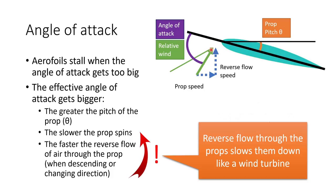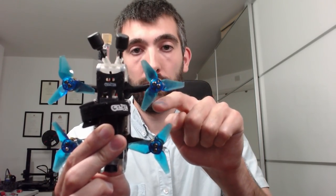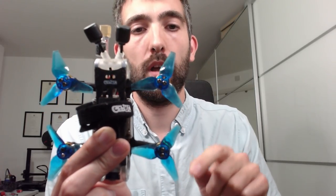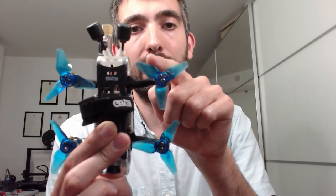There's another factor which plays into this: reverse flow through the propeller slows it down like a wind turbine. I have a neat little demo to show you this in action. This little quad's propeller would normally spin clockwise, but watch what happens if I blow up through the propeller to create some reverse flow. You can see that the prop is actually spinning anti-clockwise, because the reverse flow is driving the prop in the other direction. That's what causes the prop to slow down so much when it's in reverse flow.